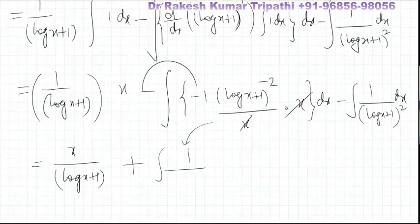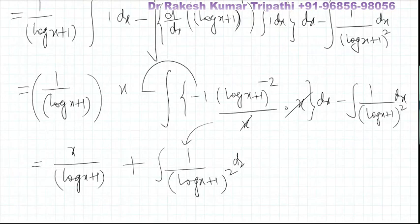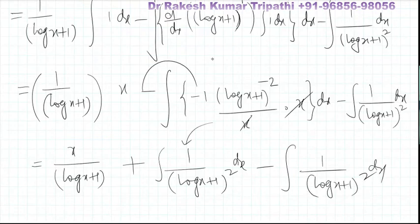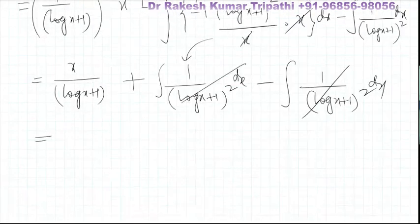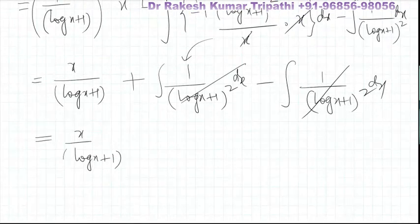This simplifies: the one upon (log(x) + 1) whole squared dx terms cancel each other out. So the final answer to the question is x upon (log(x) + 1) plus the constant of integration C.